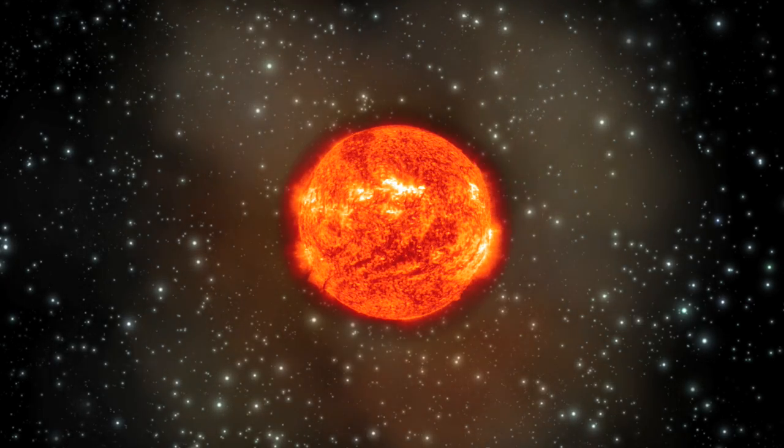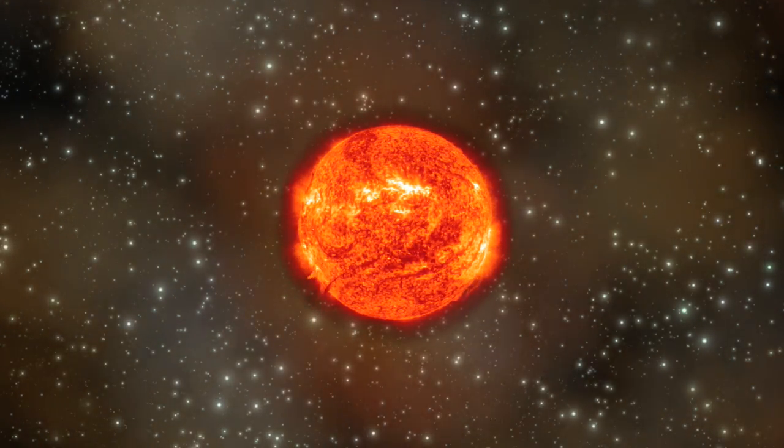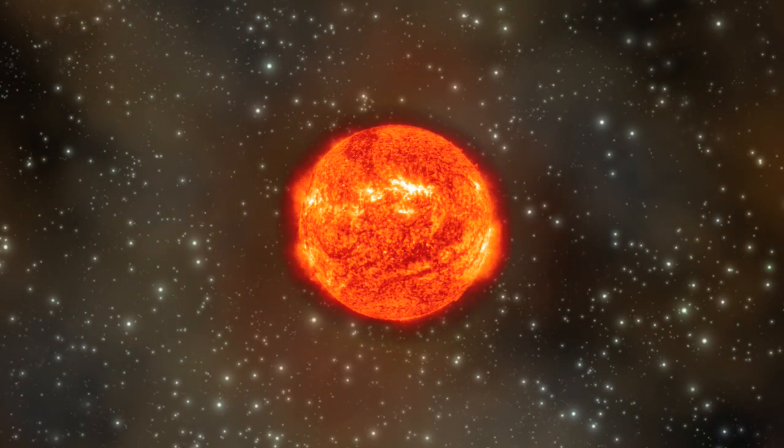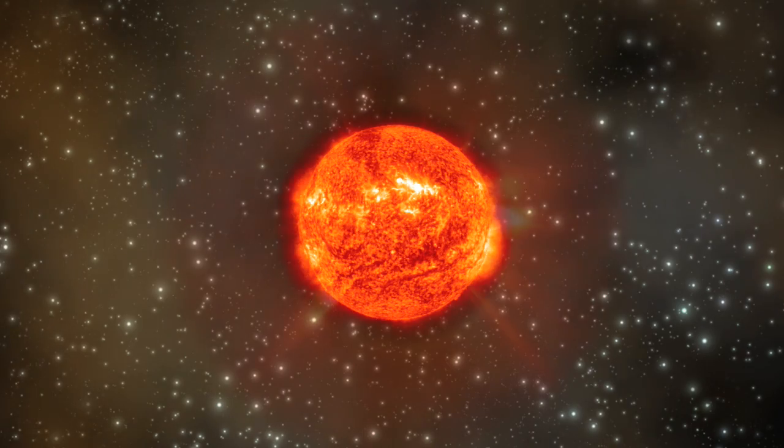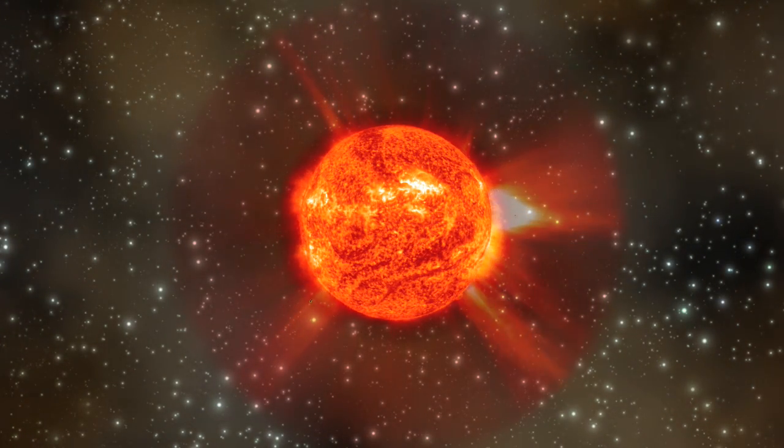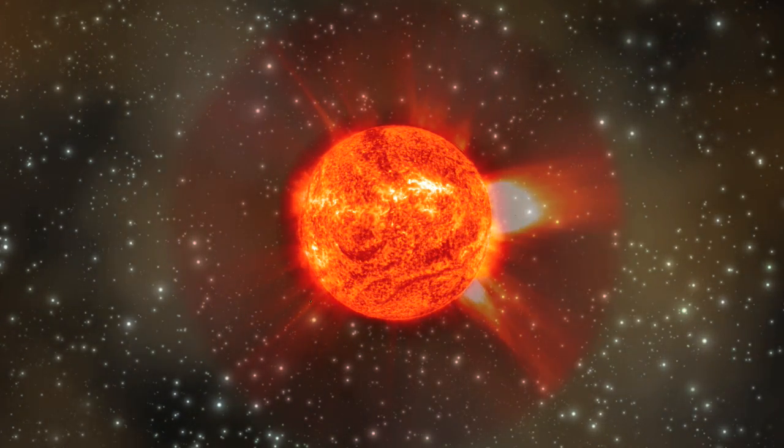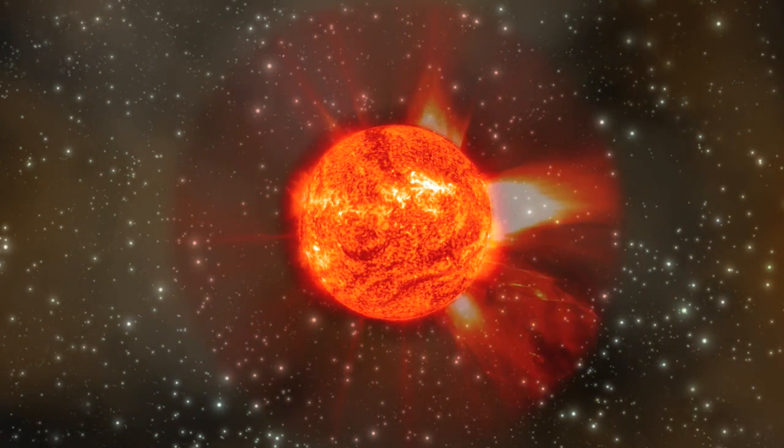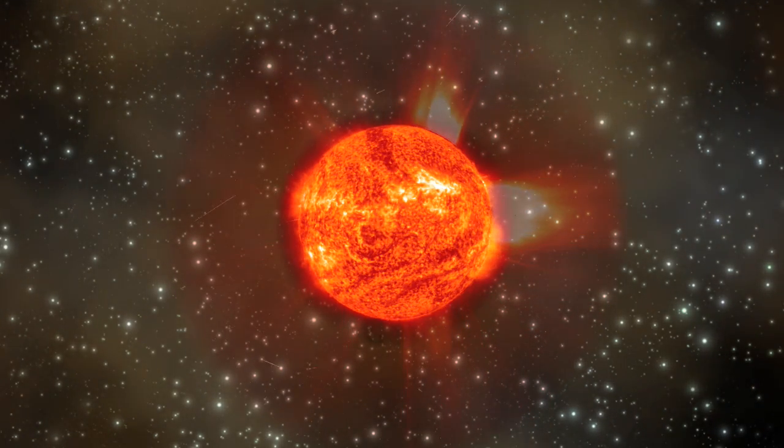The solar wind consists of two components. The fast solar wind, which is close in composition to the Sun's photosphere, and the slow solar wind, that is more like the solar corona's composition. SOHO has measured for the first time the acceleration profile of both components of the solar wind and it is found that the acceleration takes place surprisingly close to the solar surface.